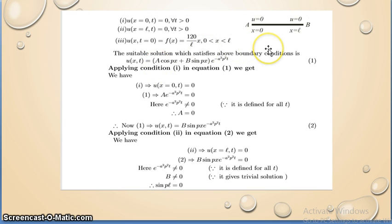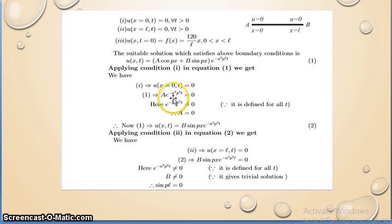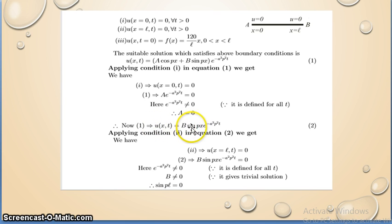The correct solution is u(x,t) = (A·cos(px) + B·sin(px))·e^(-a²p²t). Applying boundary condition 1, put x = 0: cos(0) = 1, sin(0) = 0, so A·e^(-a²p²t) = 0. Since the exponential is not zero, A = 0. Substituting A = 0, u(x,t) = B·sin(px)·e^(-a²p²t).